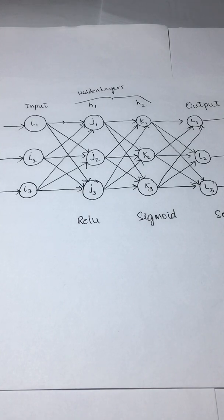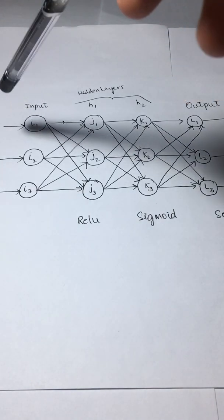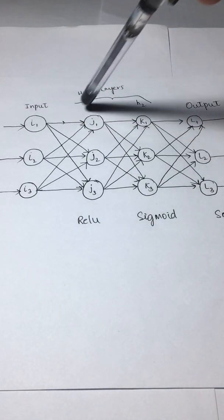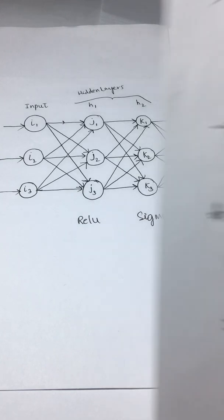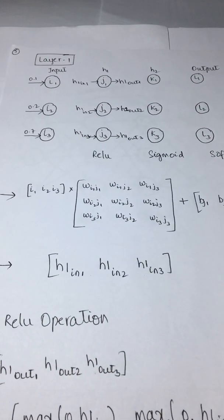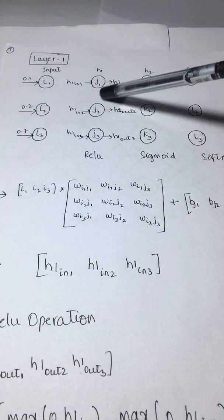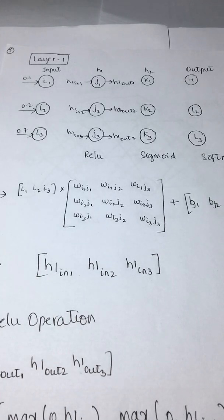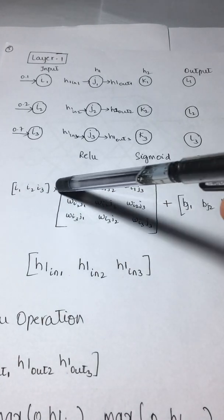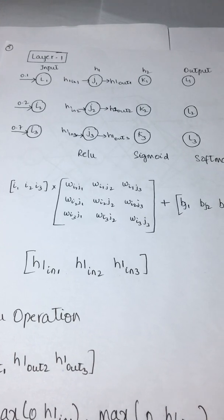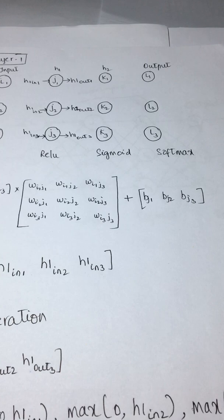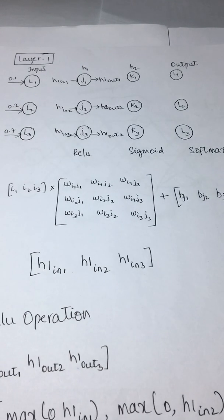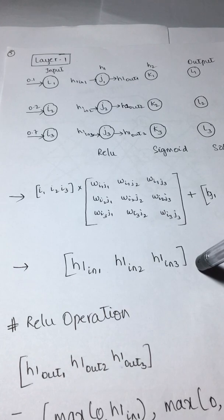Let's start with the forward pass. In the forward pass, you have the input values and you are basically moving to the first hidden layer. You are calculating H1_in1, H1_in2, H1_in3. You have your input values I1, I2, I3, and you multiply them with the randomly initialized weight matrix and add the randomly initialized biases — a cross product of each input plus bias — to get H1_in1, H1_in2, and H1_in3.